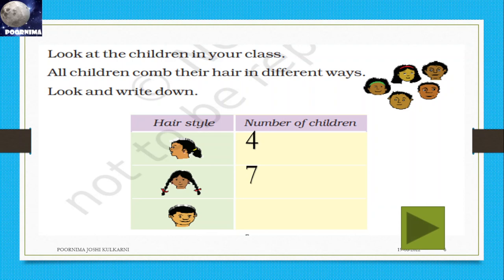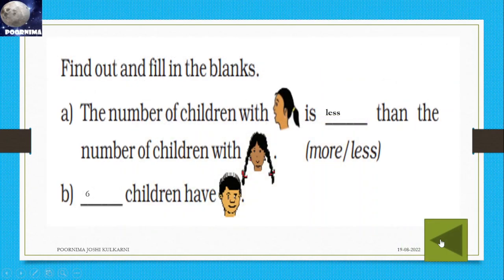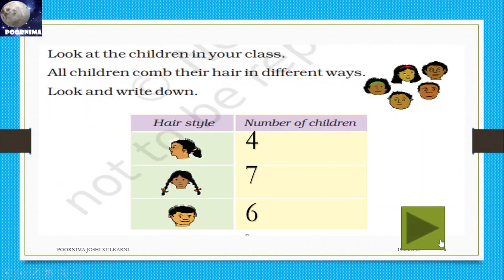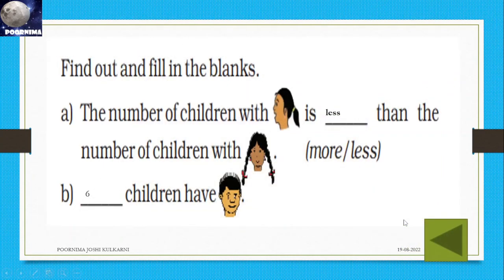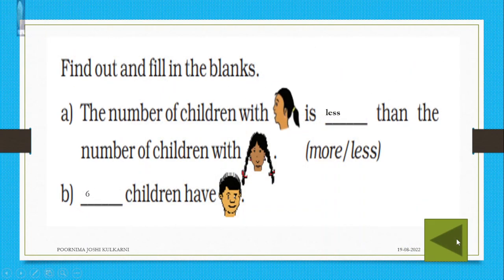And two ponytails — seven students are there. This boy's hairstyle — six are there. I will take rough numbers; you count in your classroom. Find out and fill in the blanks: number of children with one ponytail is less than the number of children with two ponytails. Four is less than seven. Therefore, we write less here. Six children have this boy's hairstyle — six is the number, six children is the answer.